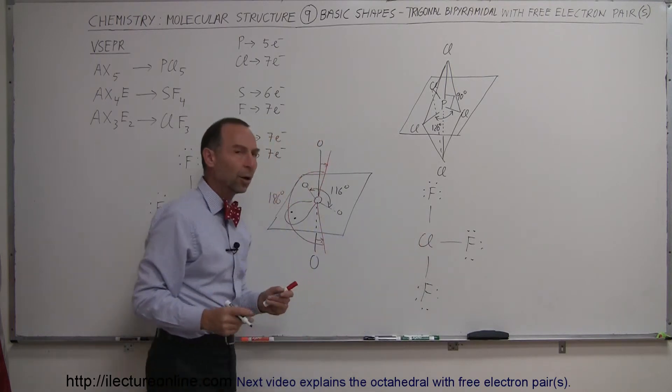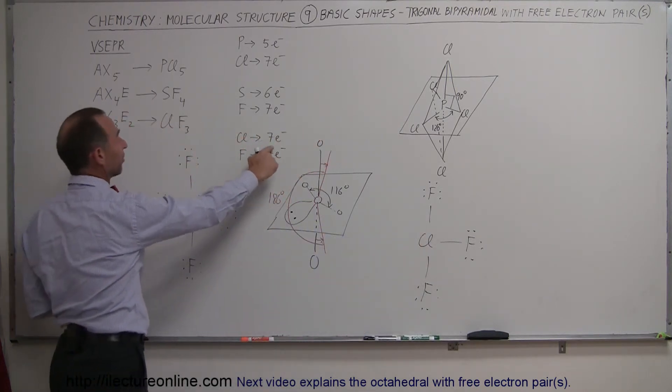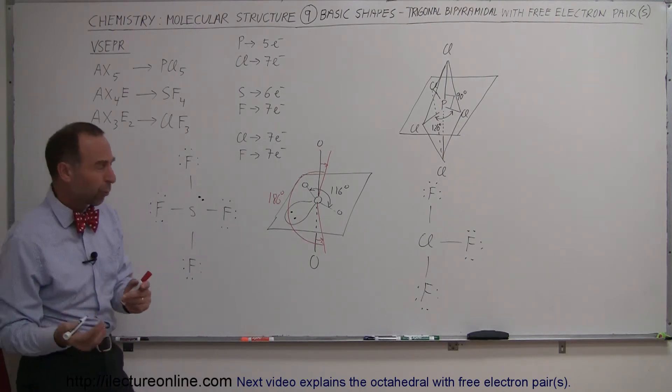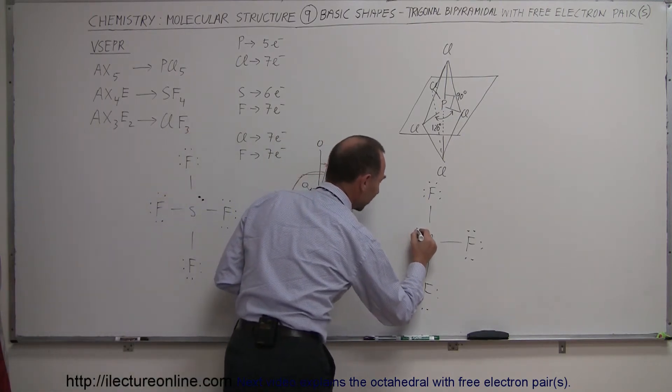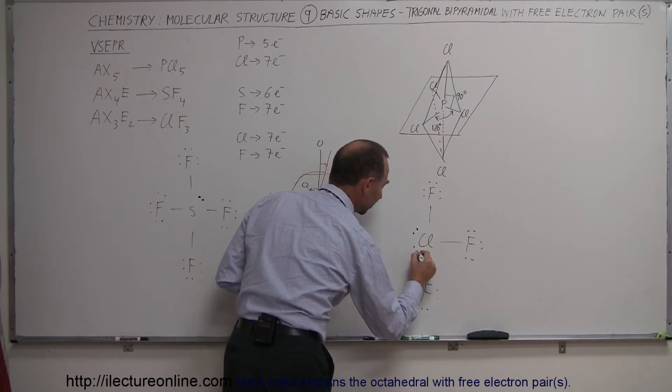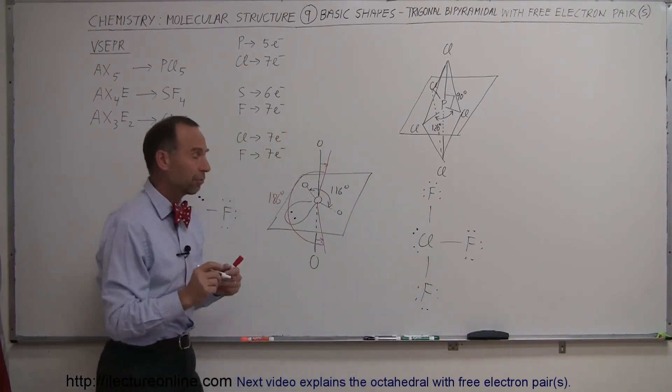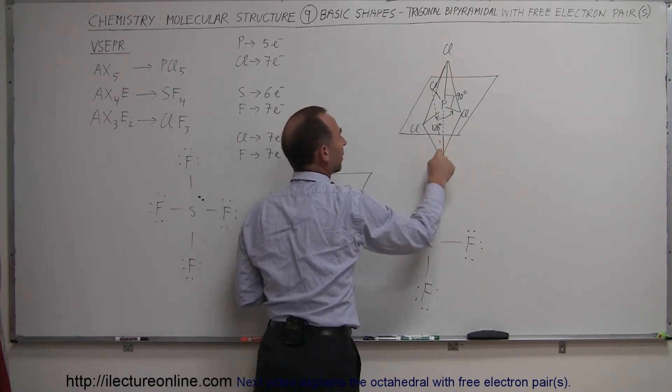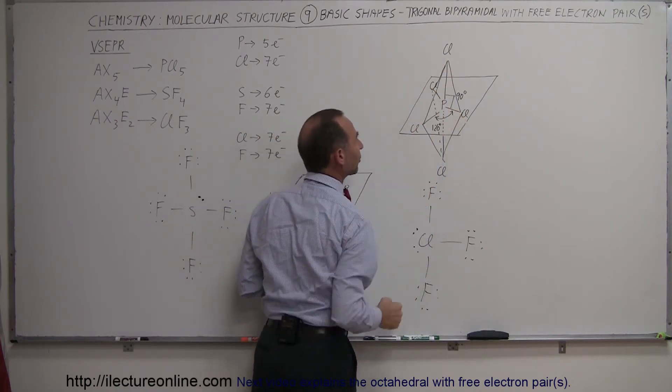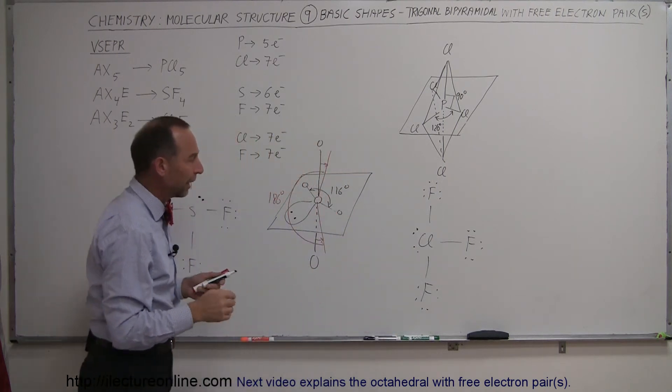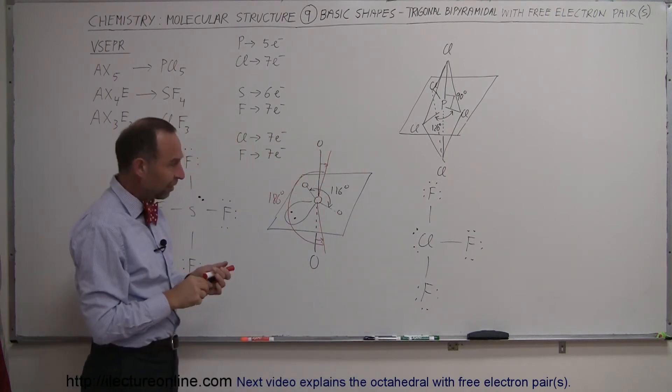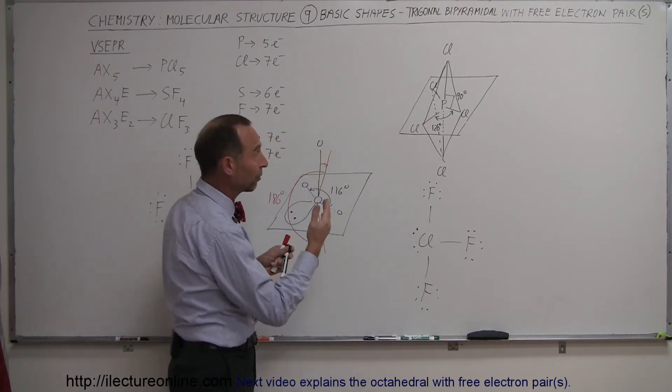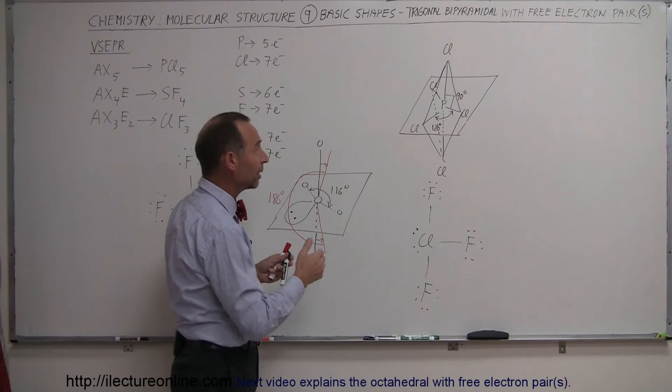But notice that chlorine started out with a total of seven free electrons, three of them are already taken up in the bonding, that means it has four left over, so that means it ends up with two free electron pairs. Now, those two free electron pairs will take positions somewhere, either up there, down there, or maybe over here to the side. What would be the most likely place where they would be? Well, definitely, they will repel each other more than any other pair of electrons, especially the ones that are taken up in bonds between the fluorine.